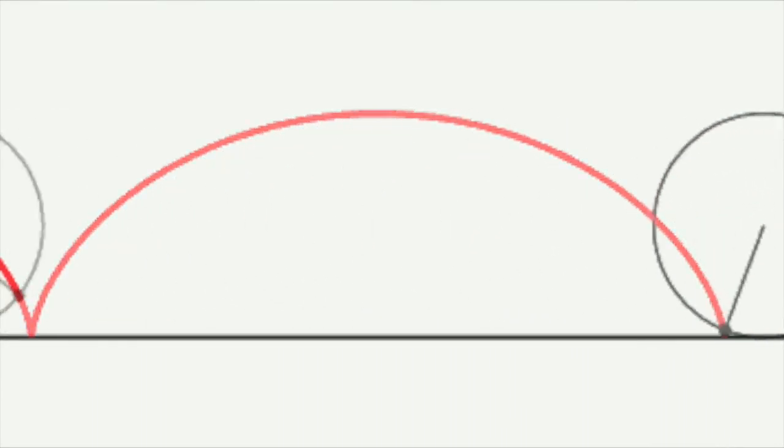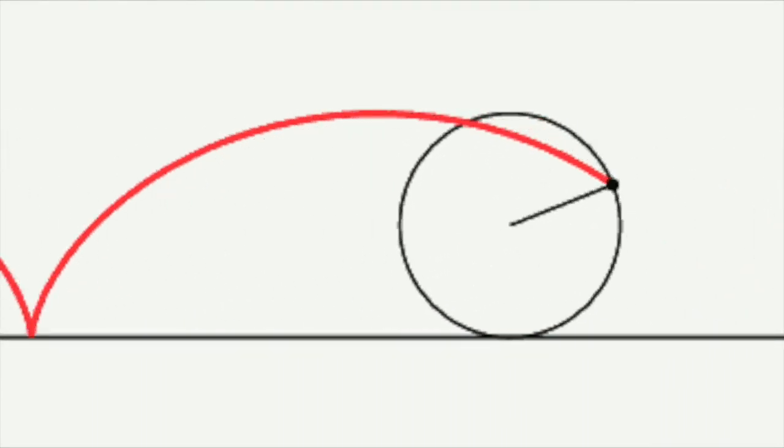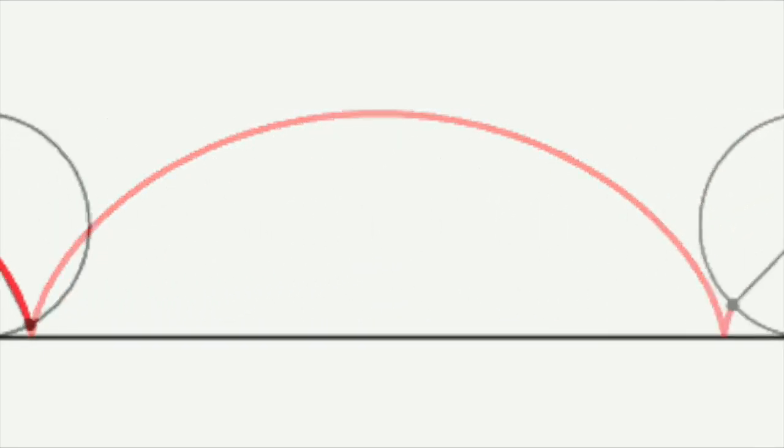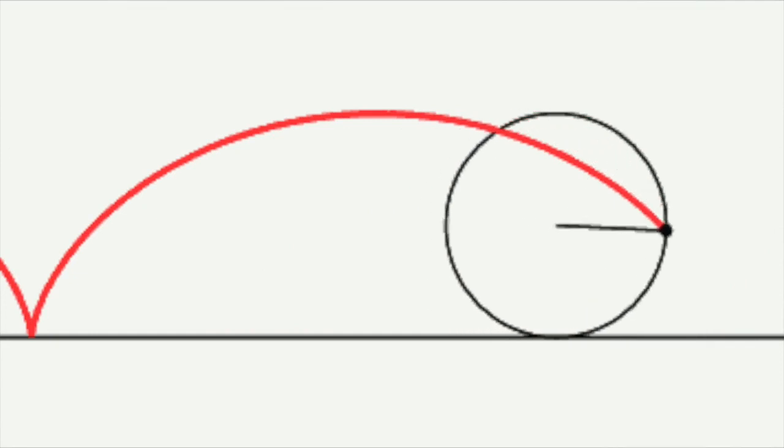The cycloid resembles a succession of arches with cusps separated by distances equal to the circumference of the circle.